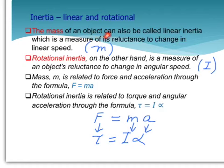The mass of an object can also be called linear or translational inertia, which is a measure of its reluctance to change its linear speed.